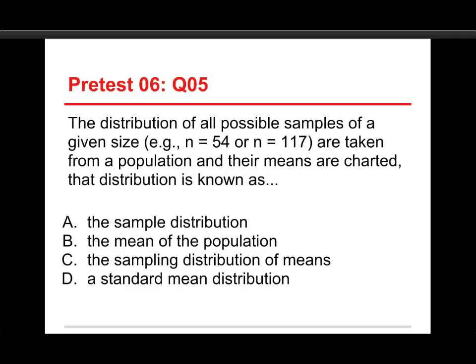Question number five: the distribution of all possible samples of a given size — for instance, 54 or 117 — that are taken from a population and their means are charted, that distribution will be known as A, the sample distribution; B, the mean of the population; C, the sampling distribution of means; or D, a standard mean distribution. The answer is C, the sampling distribution of means. The sample distribution refers to one particular sample. The mean of the population is not a distribution at all — it's a parameter of a distribution, just the center. And a standard mean distribution is nonsense.